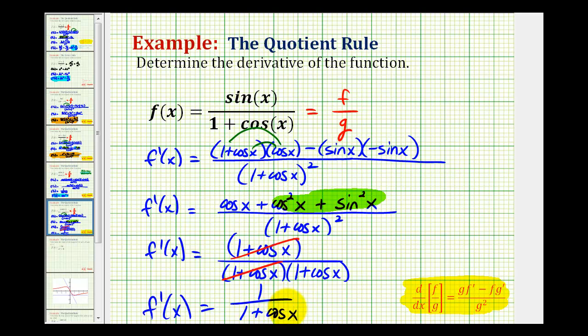We cannot write this as a sum of two fractions because we don't have a monomial in the denominator. So be careful, this is not equal to one plus one over cosine x. This is our derivative in simplest form.